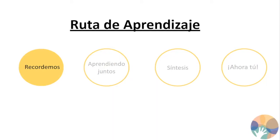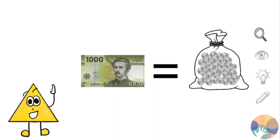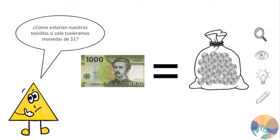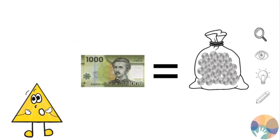Iniciemos entonces, recordemos. Los billetes son representaciones de cantidades. Por ejemplo, un billete de 1.000 equivale a la cantidad de 1.000 monedas de 1 peso. ¿Cómo estarían nuestros bolsillos si solo tuviéramos monedas de 1 peso? Sería un desastre, no podríamos cargar con tantas monedas. Por eso existen las representaciones, como el dinero o los bloques multibase.